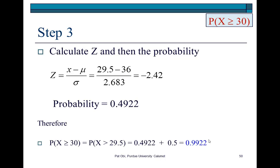Continuing with our problem, the third step is to then calculate z. So, given that, given our continuity correction, our x would be 29.5, and these are the mean and standard deviation we calculated earlier, which gives us a z value of negative 2.42. And the probability corresponding to it is 0.4922, when you check, when you look it up in your z table, which you should now know how to do.